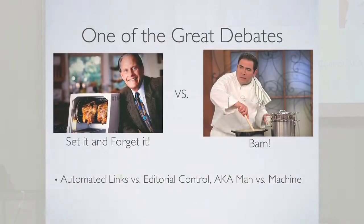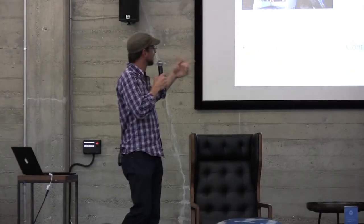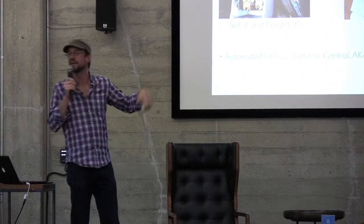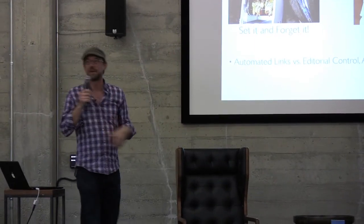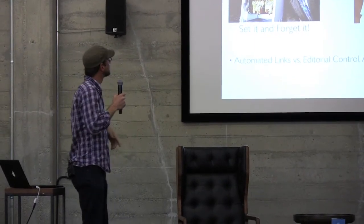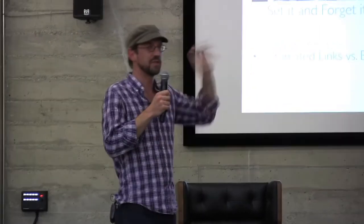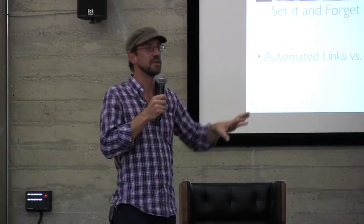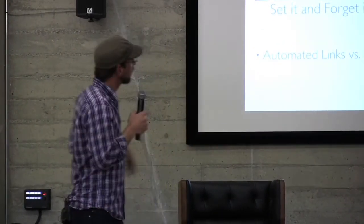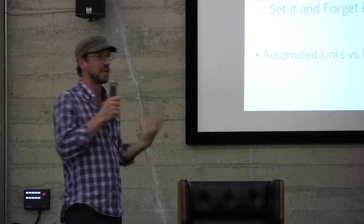Here's one of the great debates. On the left we have Ron Popeil — set it and forget it with the great chicken roaster. And then there's the other guy on the right. So the question is: do you want to just have a little thing you have no control over, where you just set it and forget it and it does something for you automatically? Or do you want to be kind of a chef and actually have some editorial control?